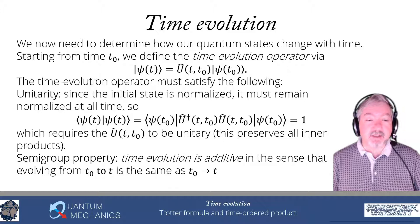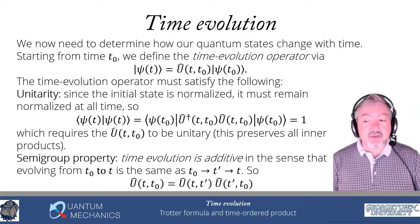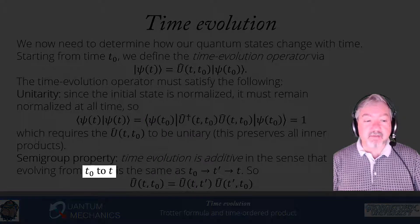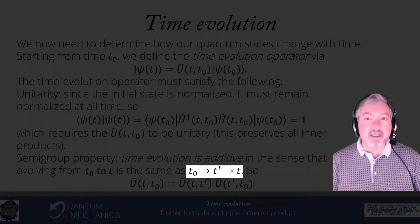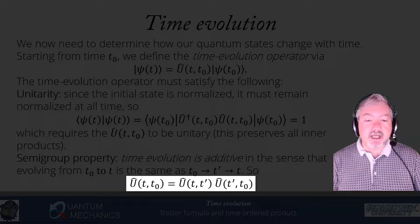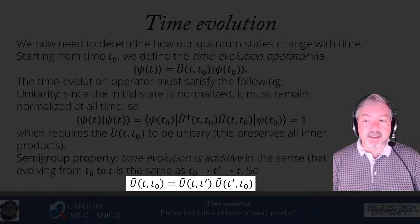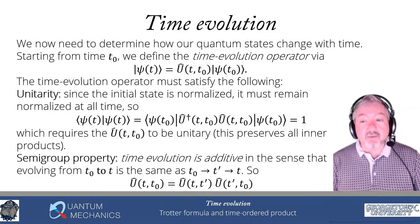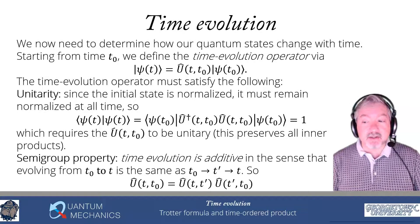The second condition is the semi-group property. This uses the fact that time evolution is additive. If I evolve directly from t0 to t, that's the same as evolving from t0 to some intermediate time t′ and then to t. That means U(t, t0) must equal U(t, t′) · U(t′, t0). Starting from the right: I start at t0, evolve to t′, then evolve from t′ to t. This has to hold for any time evolution operator — otherwise it's not describing time evolution.